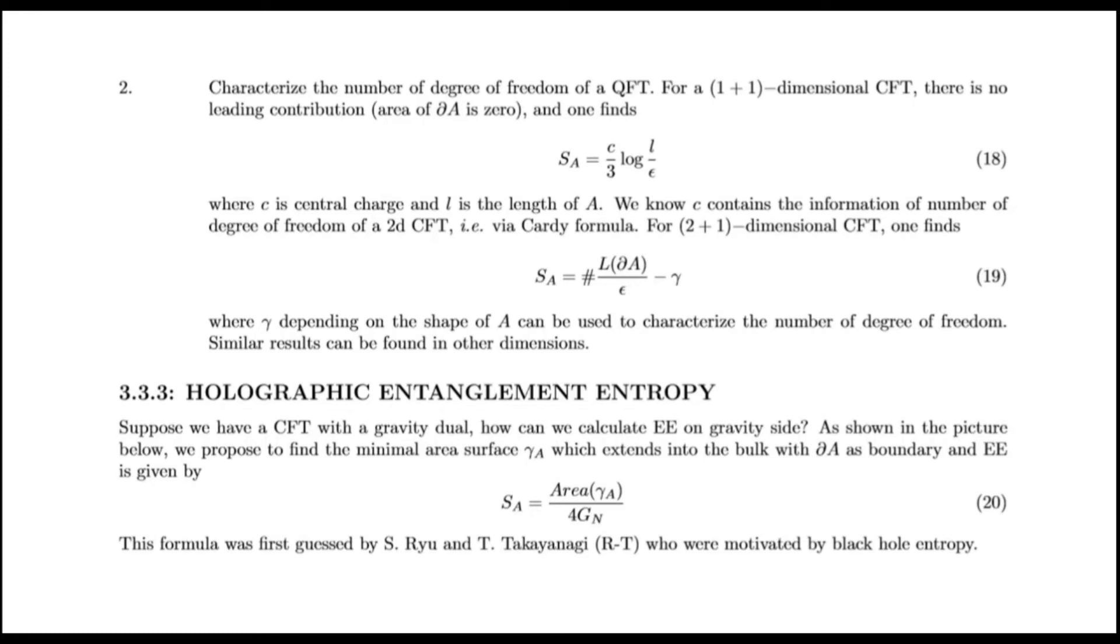Holographic entanglement entropy. Suppose we have a CFT with a gravity dual, how can we calculate entanglement entropy on the gravity side? As shown in the picture below, we propose to find the minimal area surface γA which extends into the bulk with ∂A as boundary, and entanglement entropy is given by this.